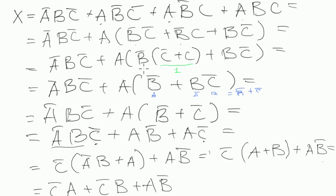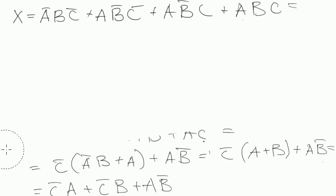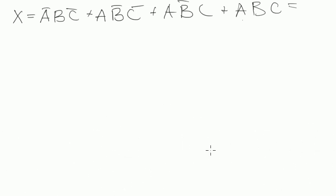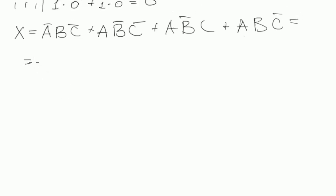Let's try it again. I have some other ideas. We can here take, let's say, AB̅ out of brackets. And then we will have C̅ plus C, which is one. So we take out AB̅ out of the brackets, and in brackets we have C̅ plus C, which is one.